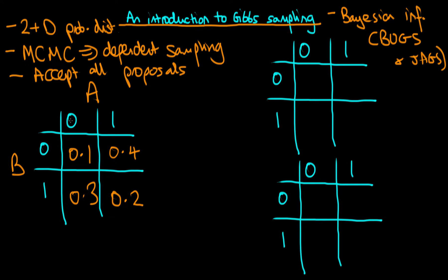The example we're going to use is the case of horse racing. We imagine that there are two horses, A and B, and they race on the same day but in separate events. Those horses can either win the event, in which case their particular random variable is equal to 1, or they don't win, in which case their random variable is equal to 0. And we suppose there is a joint probability distribution of A and B.